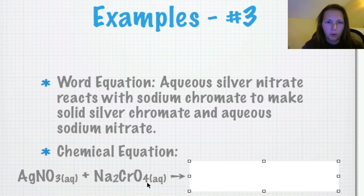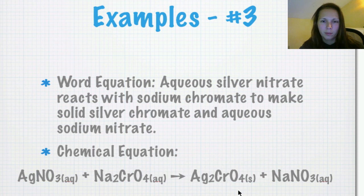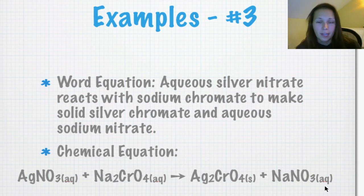The first half is aqueous silver nitrate. So silver and nitrate is a polyion that you guys need to memorize. And it's aqueous. We have the AQ there. Then we also have sodium chromate. CrO4 is another polyion that you guys need to memorize. So these two react together to form solid silver chromate and aqueous sodium nitrate. So that solid silver chromate, that's precipitate. Because we took two salts, two aqueous solutions, put them together and got a solid out of it.